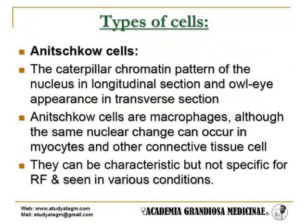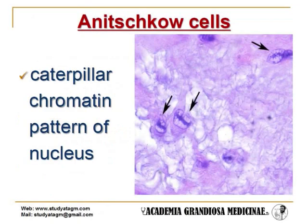Types of cells in Ashoff bodies — Anitschkow cells: The caterpillar chromatin pattern of the nucleus in longitudinal section, and owl-eye appearance in transverse section, characterize Anitschkow cells. They are macrophages but can derive from myocytes and other connective tissue cells. Anitschkow cells can be characteristic but not specific for rheumatic fever, and are seen in various conditions like metastasis to the heart, and occasionally in normal fetal and adult hearts.